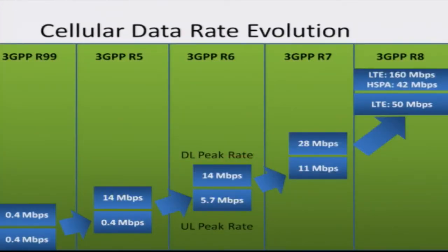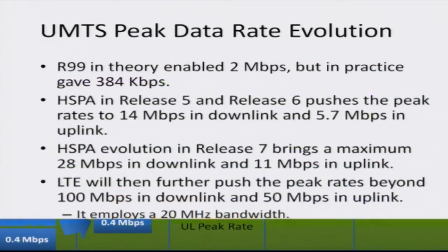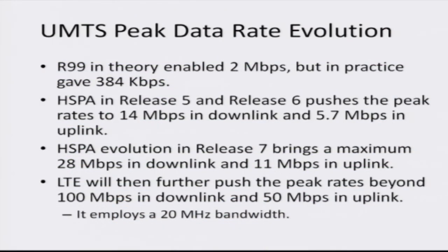Here is a brief graph showing the increase in data rate through the generations. Release 99, the initial version, supported about 300 to 400 kilobits per second. Further releases with HSDPA, HSUPA, and HSPA went from about 14 megabits per second up to 28 megabits per second. This is followed by LTE, or long term evolution, which can support a data rate of about 160 megabits per second — that is really a 4G wireless standard we will look at in later modules.